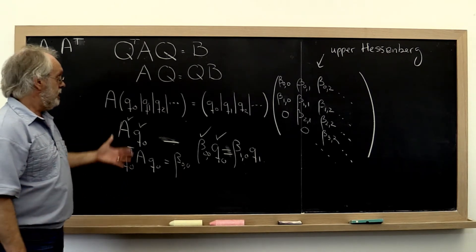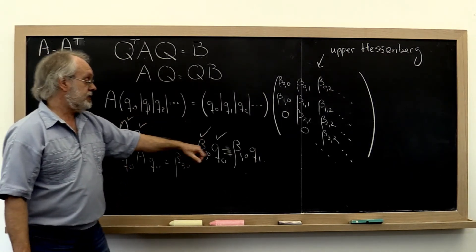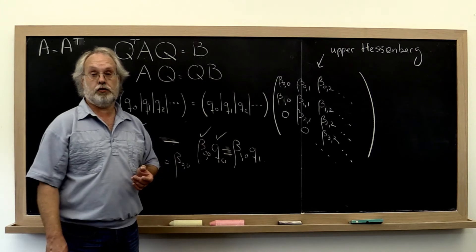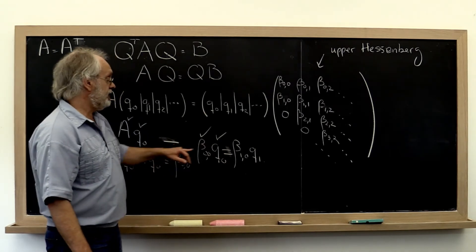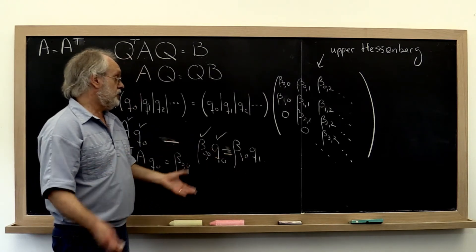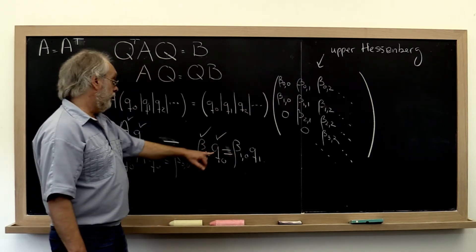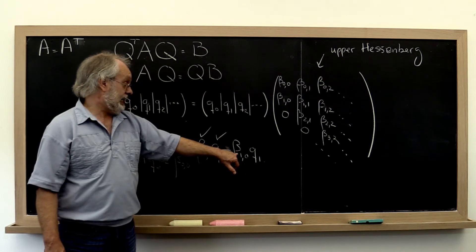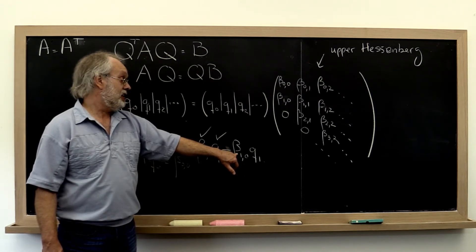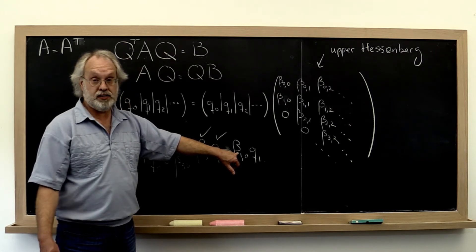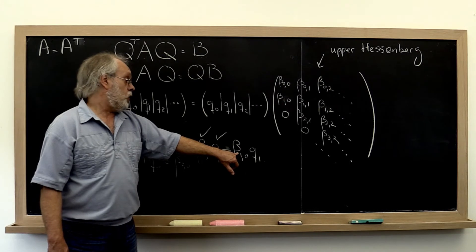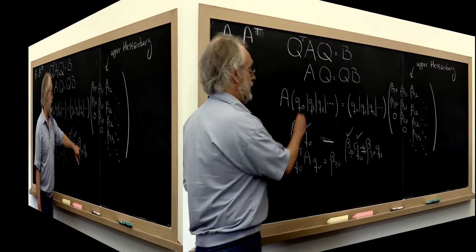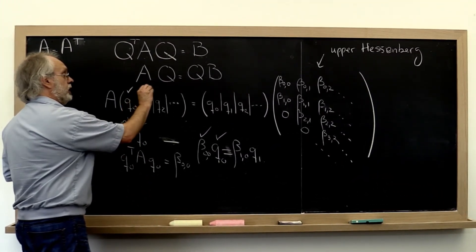And what that means is that this vector minus this vector must be equal to that vector. Where have we seen that before? We have a vector that we now know that is equal to a multiple of a vector of length one. We encountered that when we talked about the Gram-Schmidt process. And what we saw there is that your beta one zero can then be chosen to be the length of this vector. But actually, it only needs to be plus or minus equal to that length. So if we force beta one zero to be positive, then we know that Q one is actually uniquely specified.